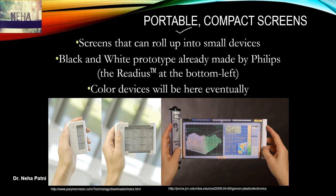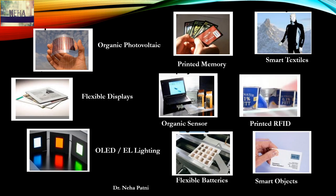One more application is a portable and compact rollable screen — a screen that can roll up into small devices. See how attractive and comfortable such a device would look. A black-and-white prototype has already been made by Philips, and color devices can be expected in the future. With this, you should be able to understand the recent applications of organic electronic materials.